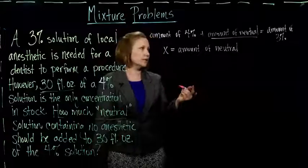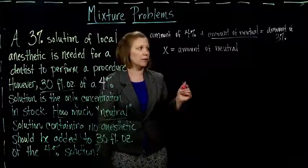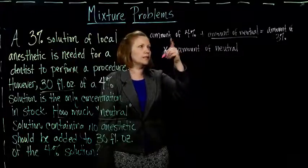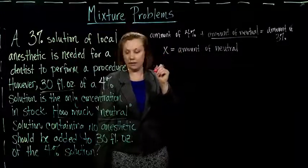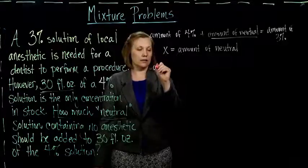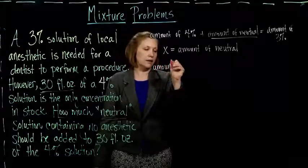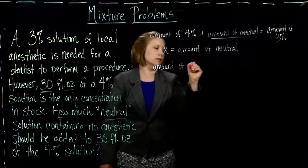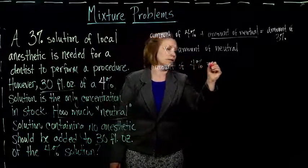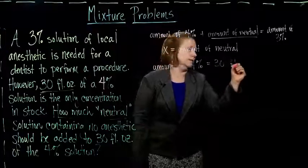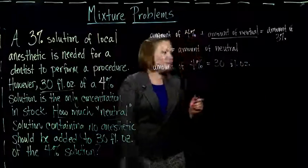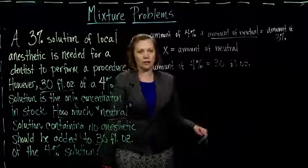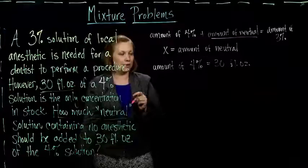So next, we set it up pretty much the same way we did before. One way to think about this, the amount of the 4%, I know what that is. They tell us, how much 4% did they tell us we had? 30 fluid ounces. Now when I write my equation, I'm going to leave the fluid ounces off, because we're working in fluid ounces. We're not going to worry horribly about the units here.